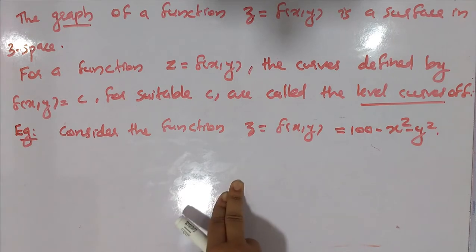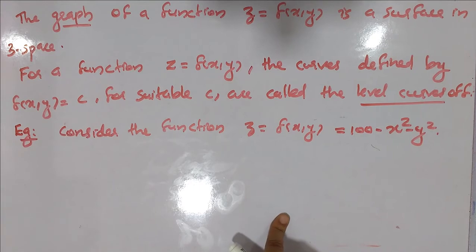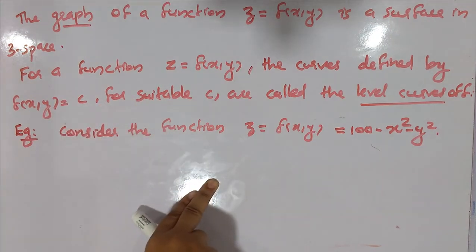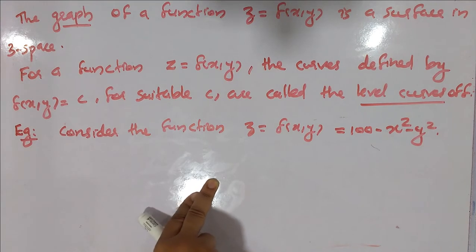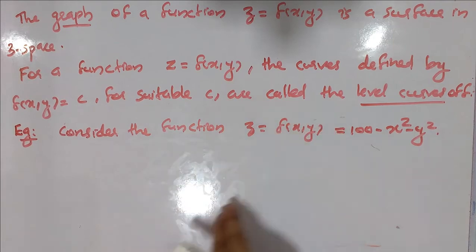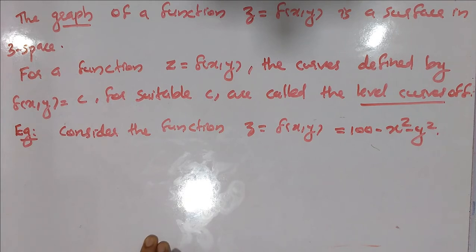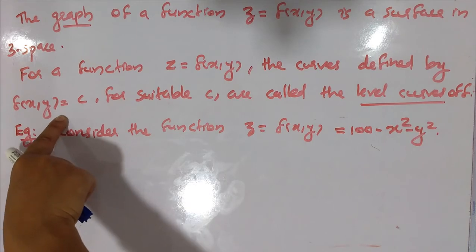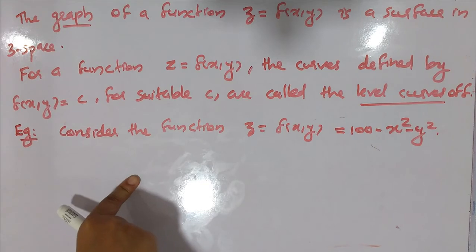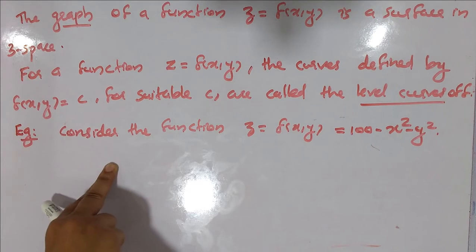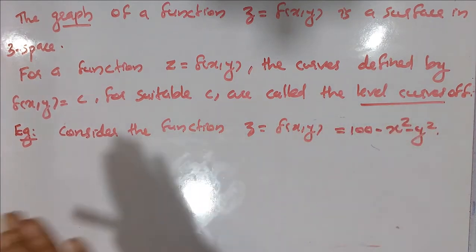For the function z equal to f of xy, setting f of xy equal to c defines a curve. For some suitable constant c, f of xy equal to c gives the level curves of f.